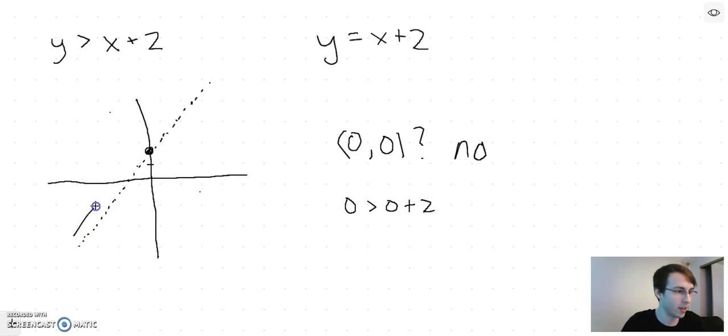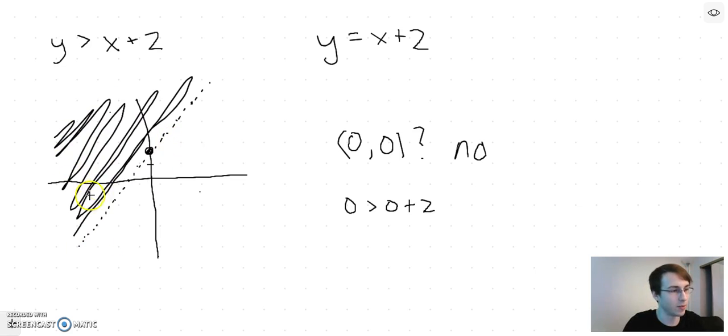So we don't shade this side, instead we shade this side. This is what our solution looks like. Just to convince you, if we take some random point here, maybe negative 10, 0. I'm going to plug that in. If y is 0 is greater than negative 10 plus 2, well yeah, because 0 is bigger than negative 8. That checks out.